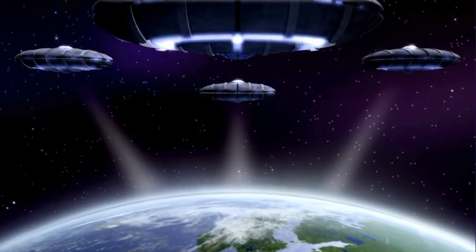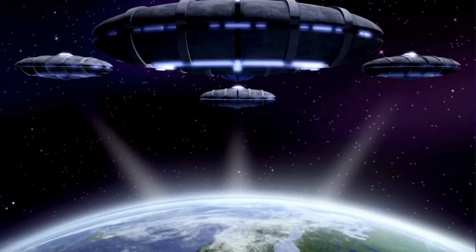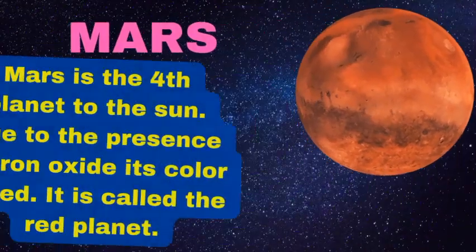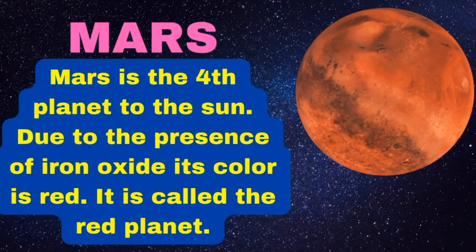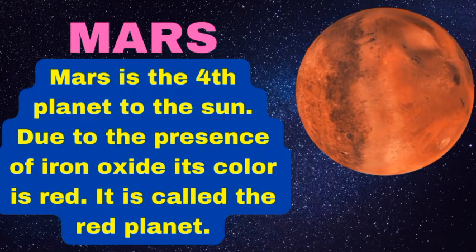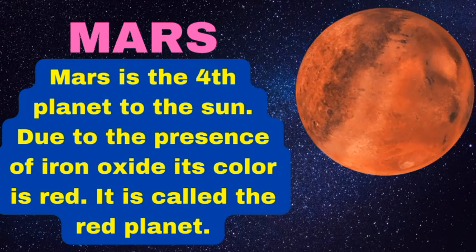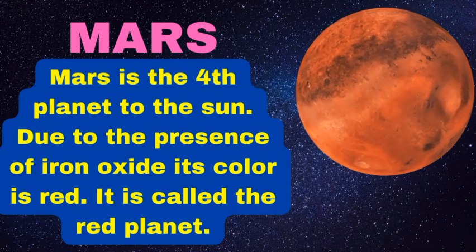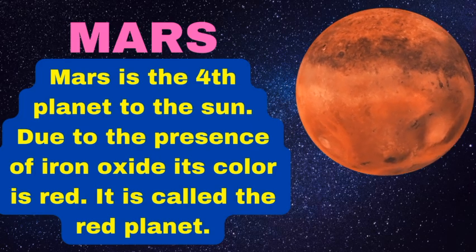Mars is the fourth planet to the sun. Due to the presence of iron oxide, its color is red, so it is called the red planet.